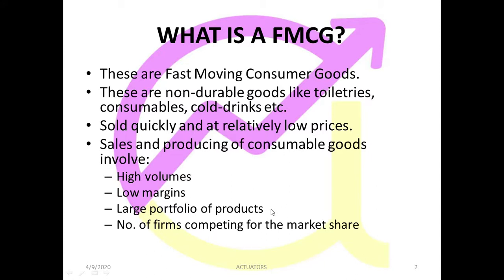There is a large portfolio of products in FMCG. If you go to a supermarket, you will get tired counting the number of products — there are so many brands. Also, the number of firms competing for market share is very high. Supermarkets like D-Mart or Big Bazaar compete on a retailing basis. On the producers' side, you will see many companies like Hindustan Lever, Patanjali, and Dabur — there is huge competition in the market for these kinds of products.